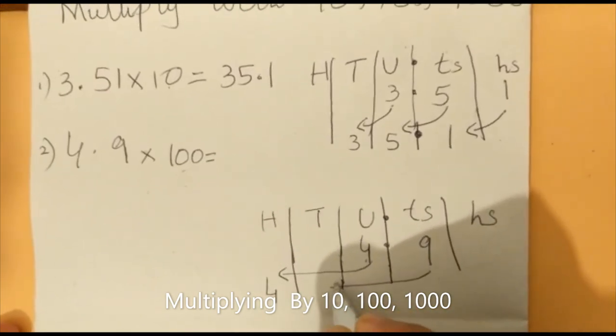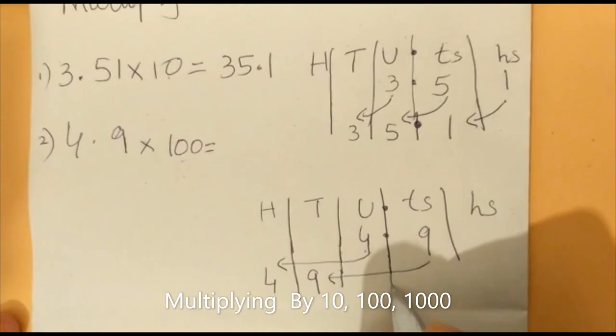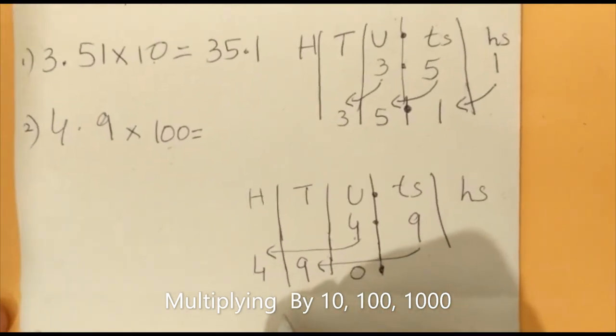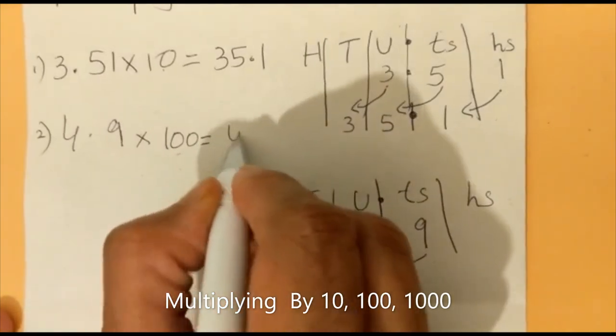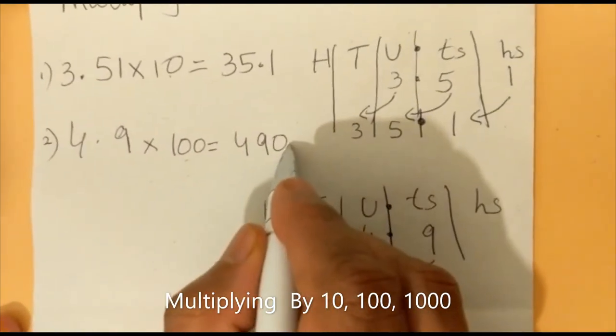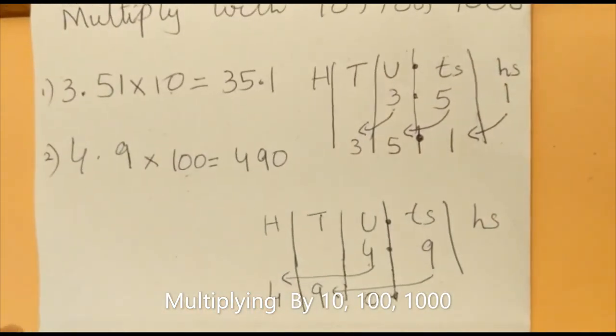We'll solve it up to the decimal. You can count the zero here: 4, 9, 0. The answer is 490.